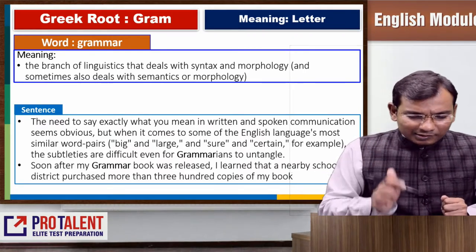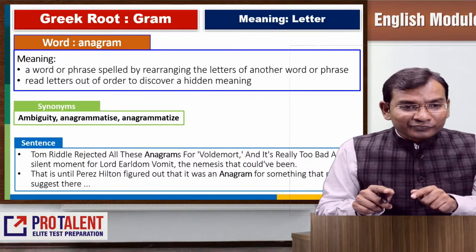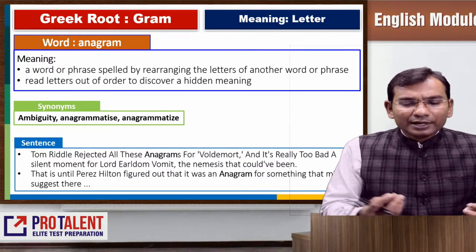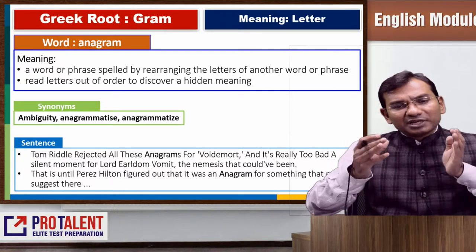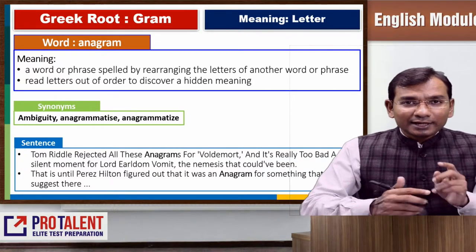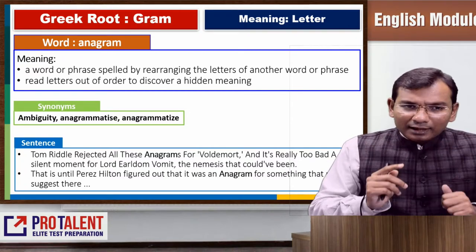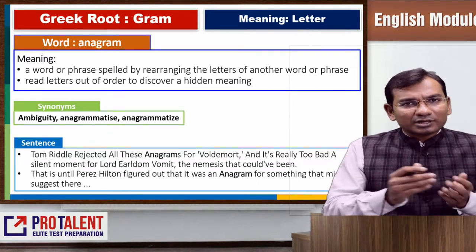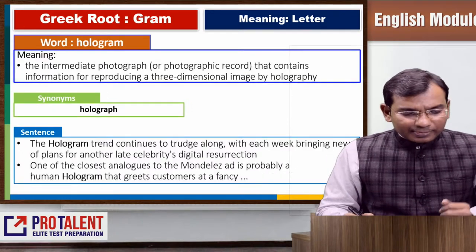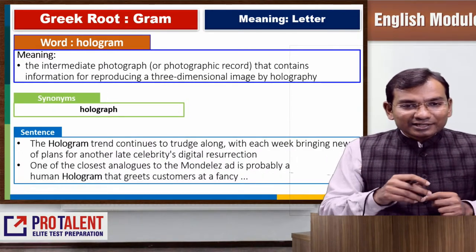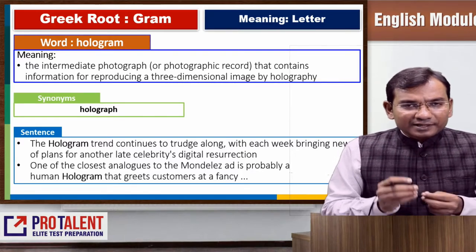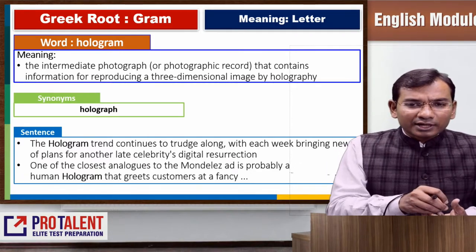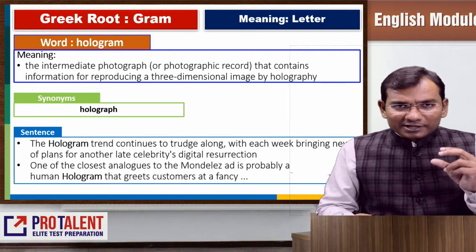An anagram is a word or phrase spelled by rearranging the letters of another word or group of words to create a meaningful new word. It is a kind of game or competition. A hologram is a three-dimensional image produced by holography — it is not a full photograph but contains information for reproducing a three-dimensional image.